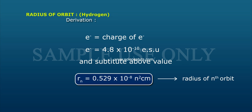The radius of the nth orbit, Rn, is equal to 0.529 times 10 to the power minus 8 times n squared centimeters. This is the radius of the nth orbit of the hydrogen atom.